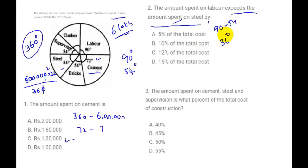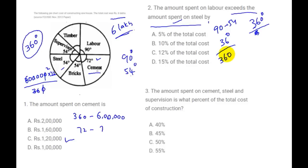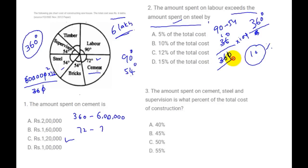The total is 360 degrees. Out of 360 degrees, 36 degrees is the difference. As a percentage of the total cost, 36 out of 360 is 10 percent. So the answer is B — 10 percent of the total cost of the building.